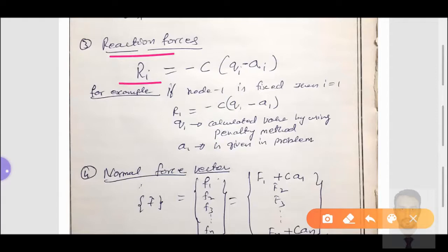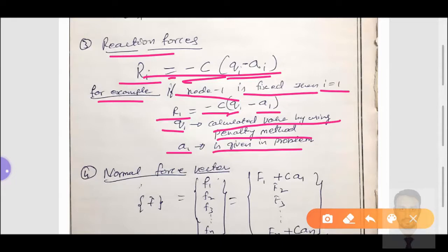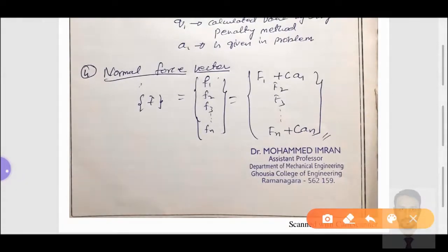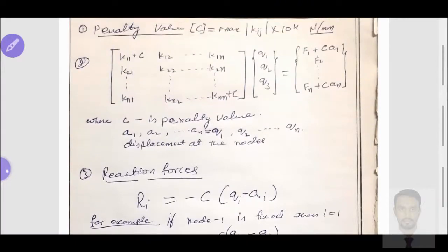Similarly, for the force vector we need to add C times the penalty value times displacement at node number one for the first force, and at node number n for the nth force, wherever the fixed ends are. The reaction force equation changes slightly: r_i equals minus C times (q_i minus a_i). For the normal force vector, f equals f1 plus C times a1, while f2 and f3 remain the same. This is the formula list for the penalty method of handling boundary conditions.